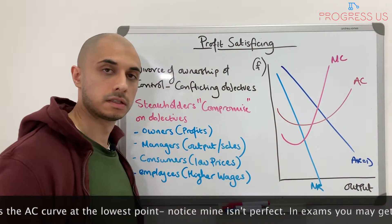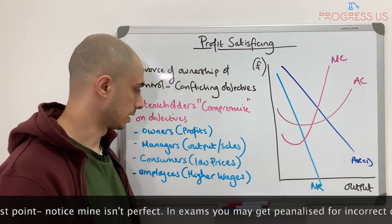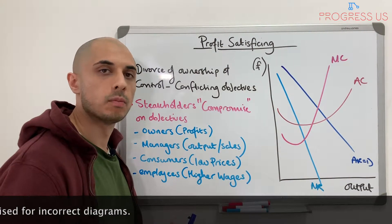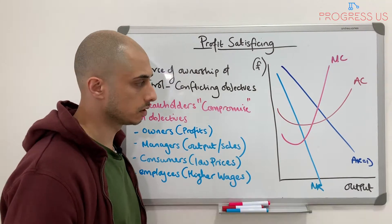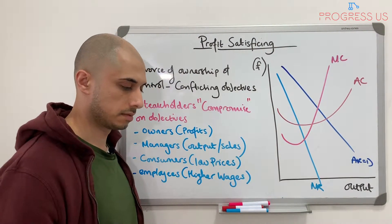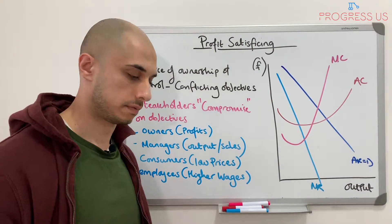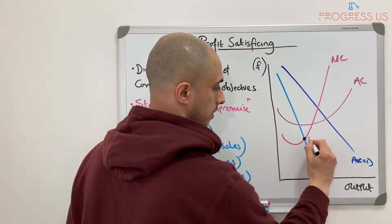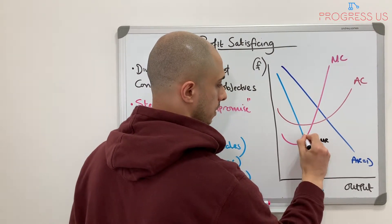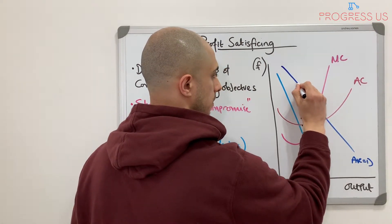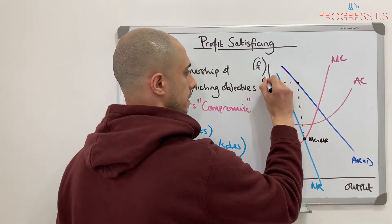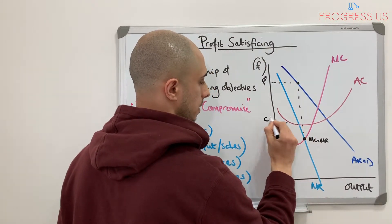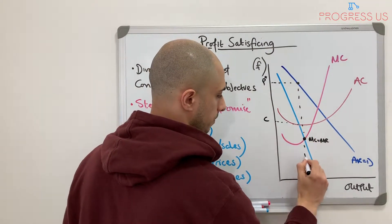Now we're looking at profit satisficing. Considering all these stakeholders, how do we come to an agreement where welfare is somewhat increased in the short term? We always start with profit maximisation as the initial point. So where MC equals MR, that's our profit maximisation point. We take up to the demand curve and that gives us P star, our cost at that point is C, and our output is Q star.